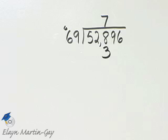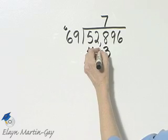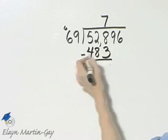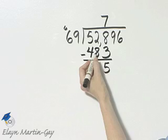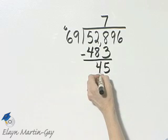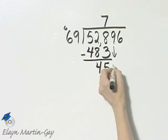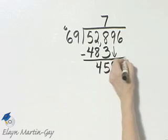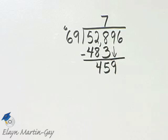Then if you subtract you'll have 4. Bring down the next digit, that would be 9. Now let's continue the process. Well, I know 7 times 69 is 483, and that would be too much since I only have 459.